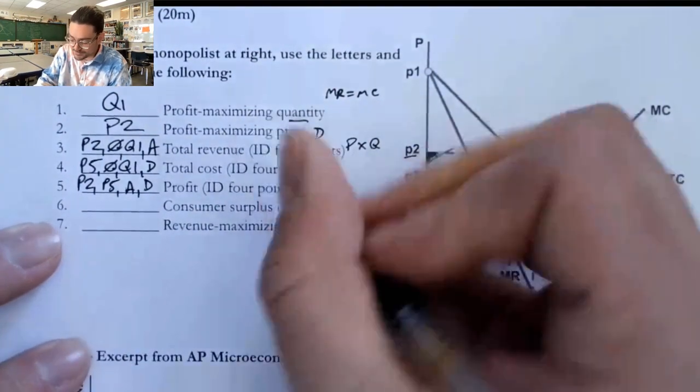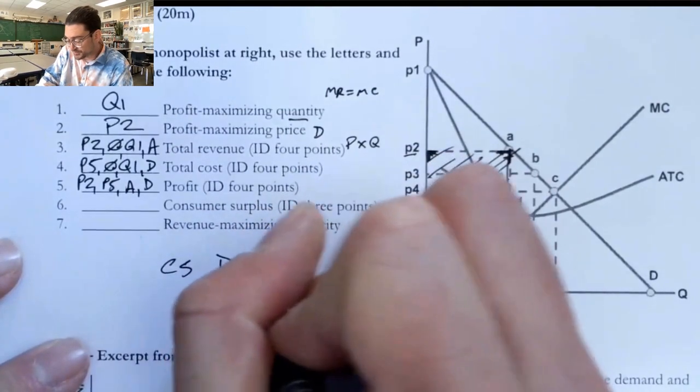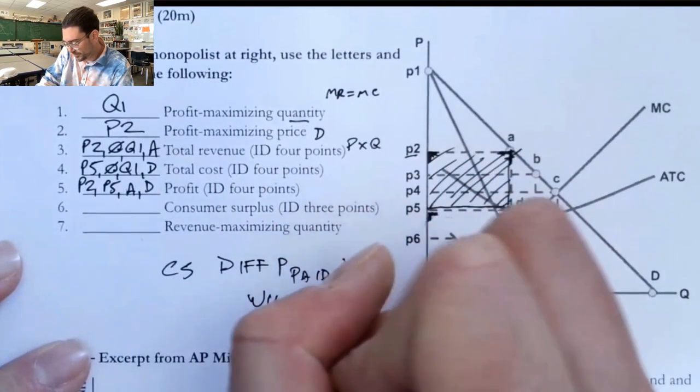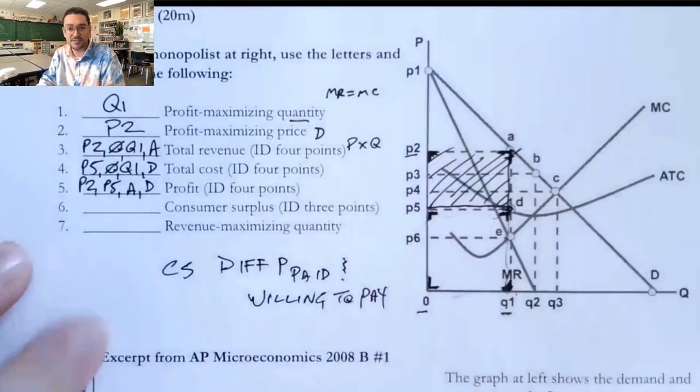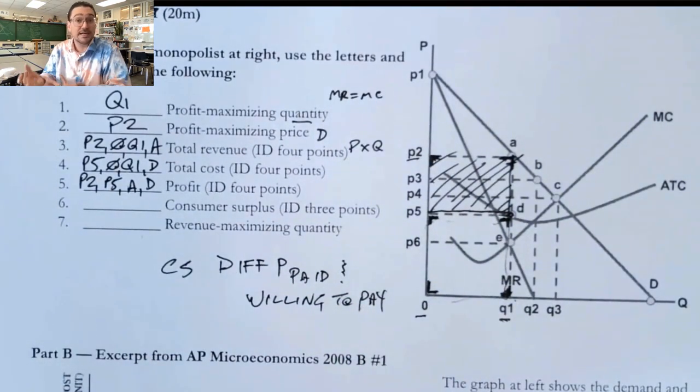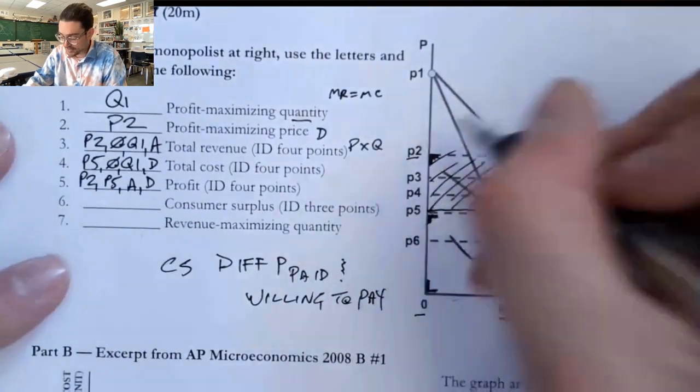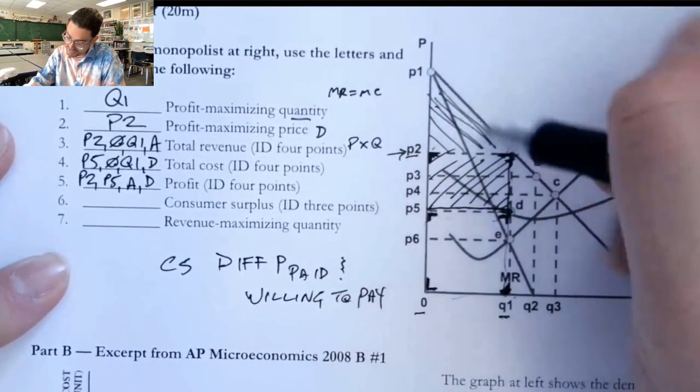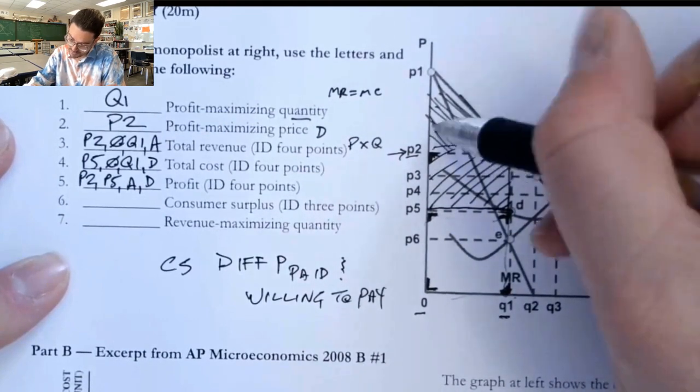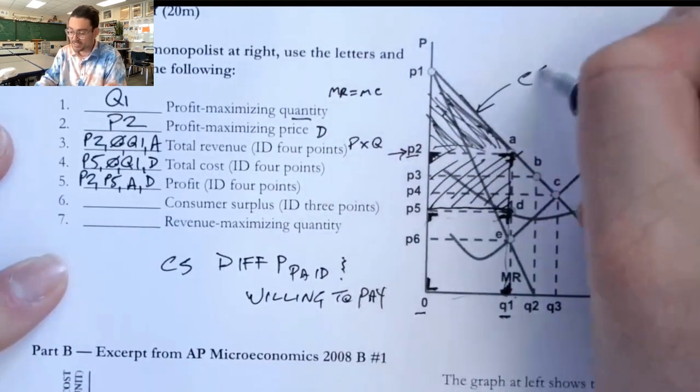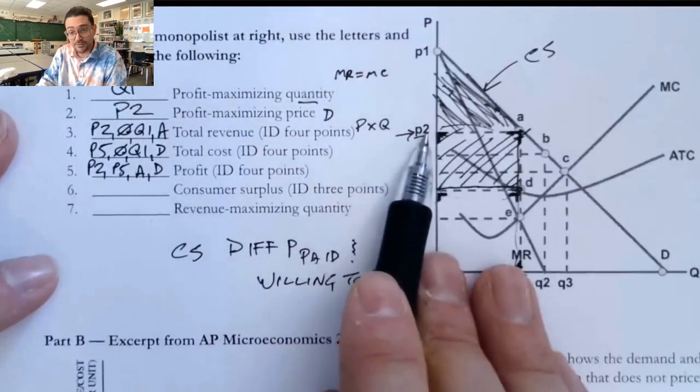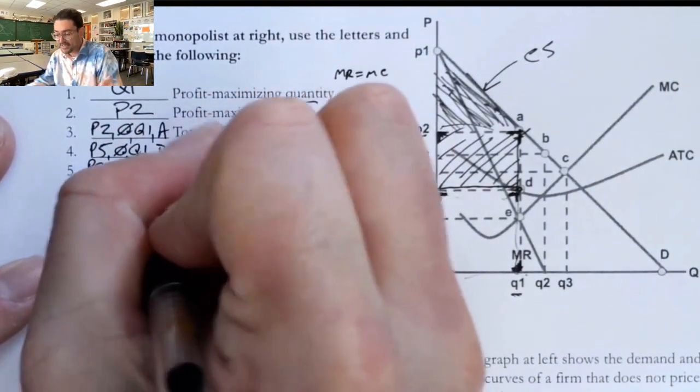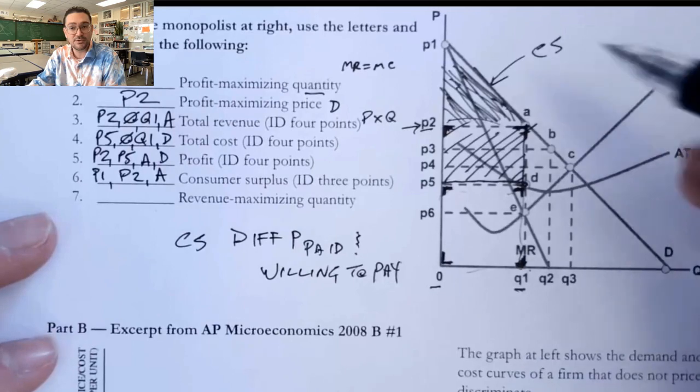Consumer surplus. Well, we remember that consumer surplus is the difference between the price paid and willing to pay. That's a good thing to remember - that's the difference between what you did pay and what you were actually willing to pay. And so if we did pay here, P2, then the area that's above that price, this shaded area right up here, all of that is our consumer surplus. And so the area of that is P1 to P2 over to point A. We could find the area of that if we were asked for a quantitative value if we knew some numbers here.